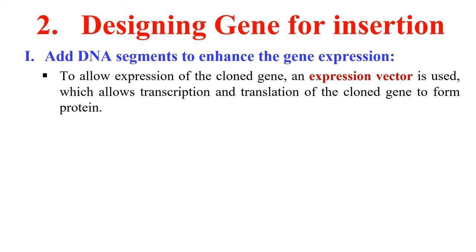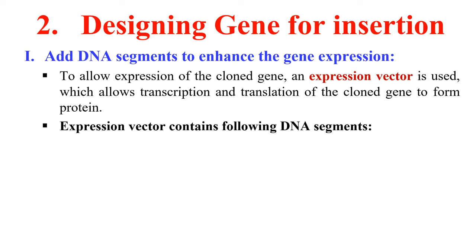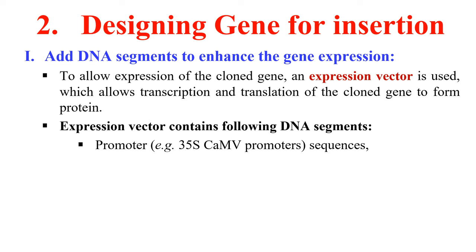The next step after isolation of the gene is designing the gene for insertion. Here we are making our gene capable of expressing in the plant cell. For that we use a special vector known as an expression vector, and we add certain elements to it. The first element is a promoter, because transcription starts from the promoter — our gene of interest definitely needs a promoter to transcribe. For that we use a strong promoter, like the 35S cauliflower mosaic virus promoter sequence, which can be used to transcribe the gene of interest.